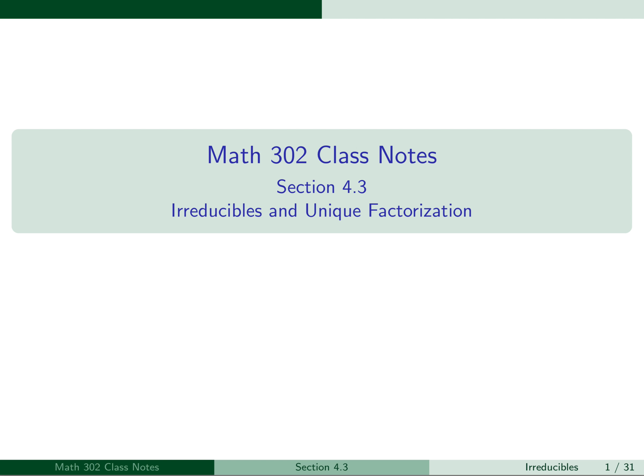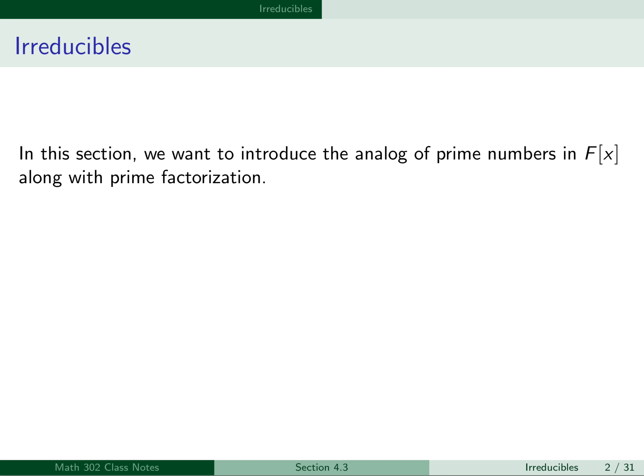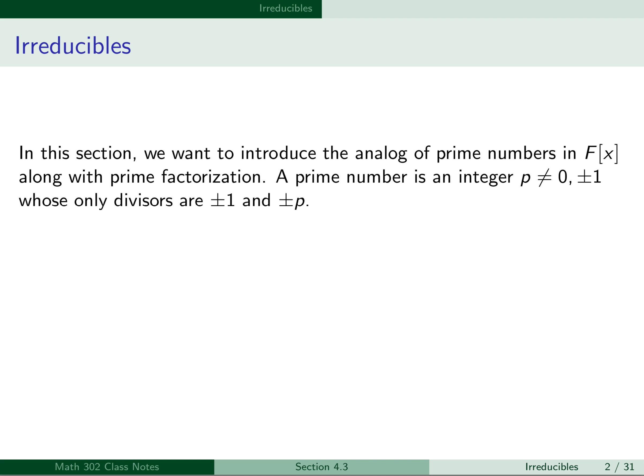This is the lecture for section 4.3, Irreducibles and Unique Factorization. In this section, we want to introduce the analog of prime numbers in the polynomial ring F[x], along with prime factorization.